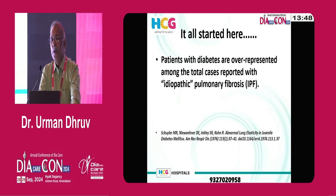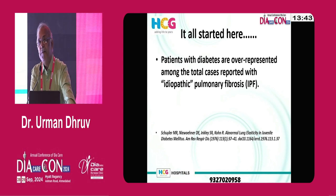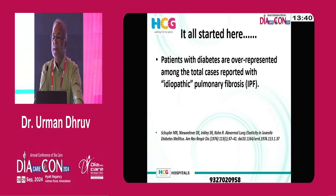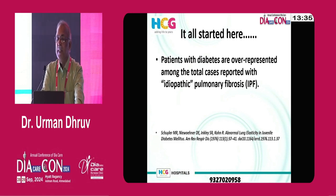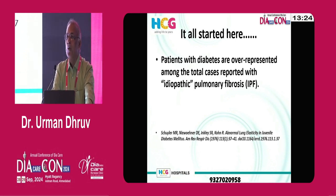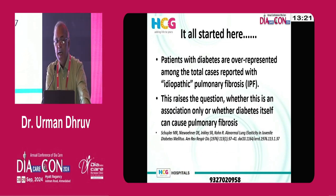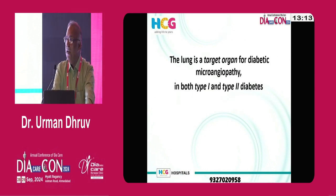It all started in 1976, about 50 years back, when patients with diabetes were over-represented among total cases reported with IPF. There was a first statistical analysis done, but it was drowned on paper and nobody thought about it. It raised the question whether this is only an association or whether diabetes itself can cause pulmonary fibrosis.